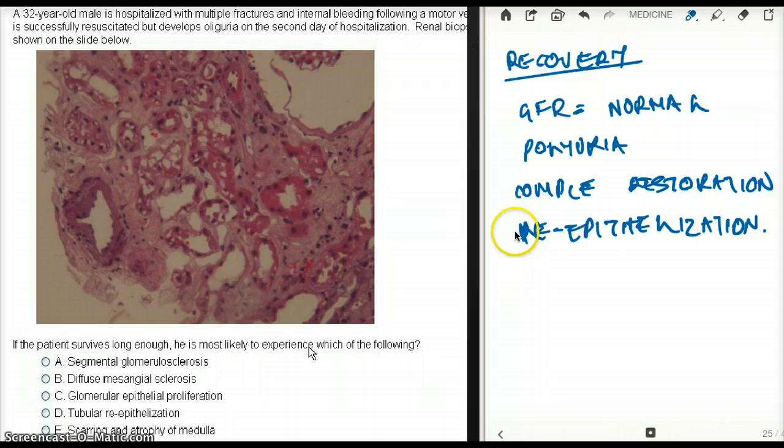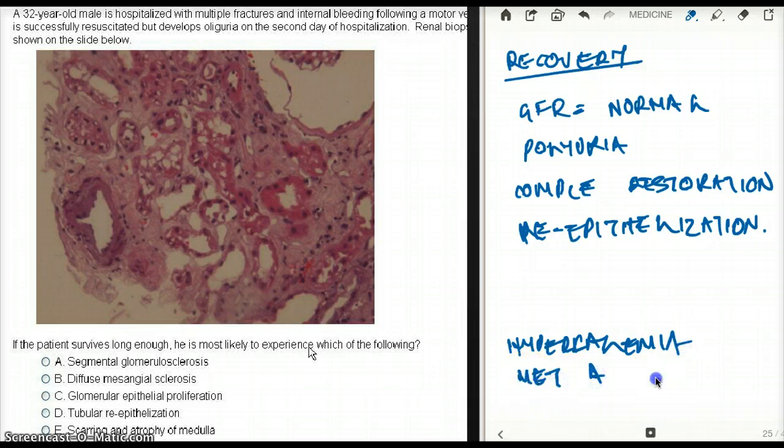One more thing that I kind of forgot to mention earlier is that, in the oliguric phase, there is going to be hyperkalemia. And, metabolic acidosis, causing an anion gap during the oliguric phase.